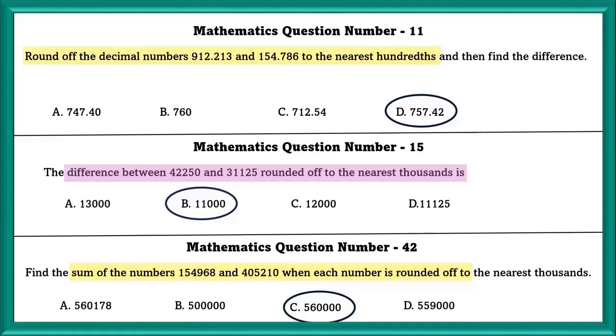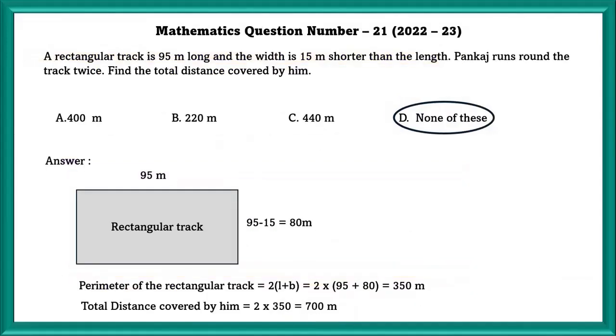In this question they have said that Punkaj runs around the track twice. Instead of finding only the perimeter, we need to find twice of that because Punkaj runs around the track twice. Be careful if they have asked twice, thrice, or once also.